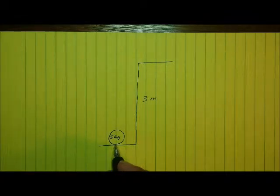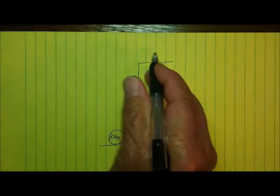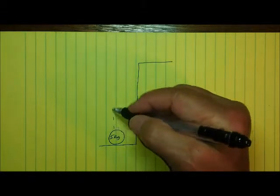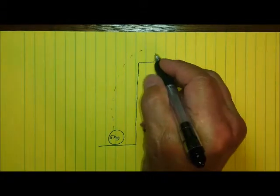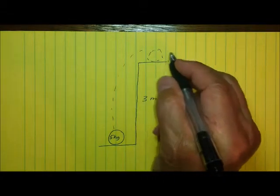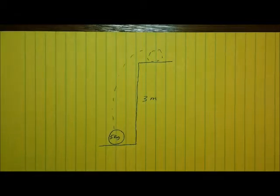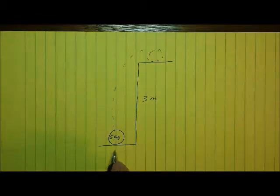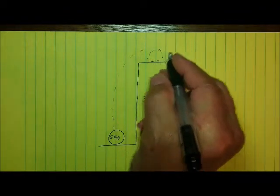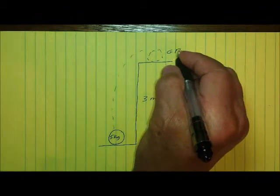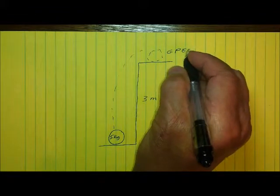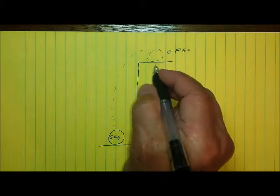And if I lift this object and place it up here on the shelf, I pick it up and set it on the shelf. In order to do that, obviously, I have to do some work. In doing that work, I'm giving this object energy and storing that energy as gravitational potential energy, GPE, when I place it on top of the shelf.